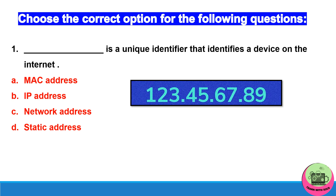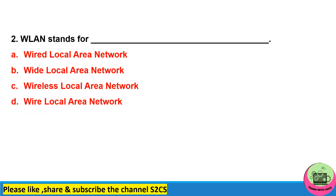First one: dash is a unique identifier that identifies a device on the internet. You can see the format as well — the answer will be IP address. Second one: WLAN stands for — wireless local area network is the correct answer.